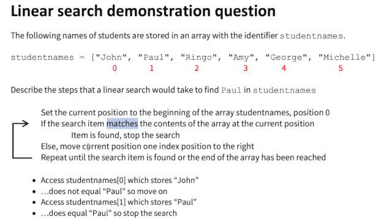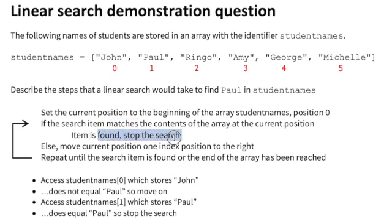So we move to the next position in the array, which is position 1. We repeat the process and ask ourselves if the search item is a match. In this case yes it is, so therefore we have found the item and we stop the search.